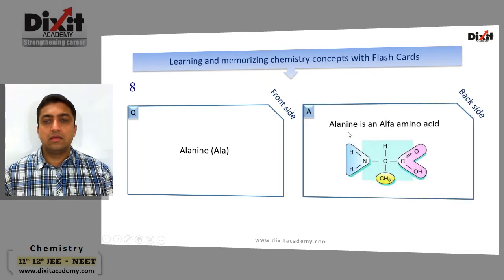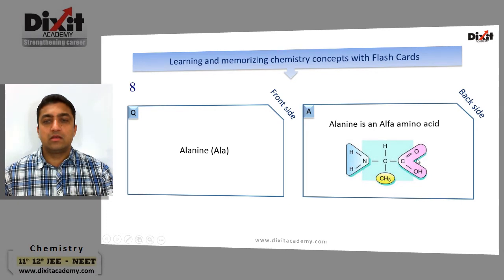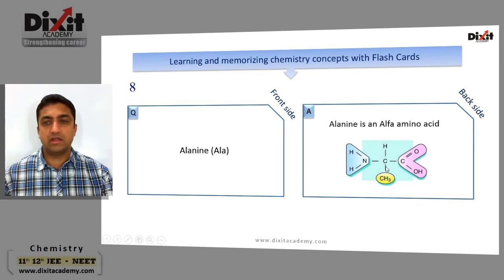Alanine: it is an alpha amino acid. It has a carboxylic group, an alpha carbon to which a CH₃ group is attached, and an amino group present on the alpha carbon atom.